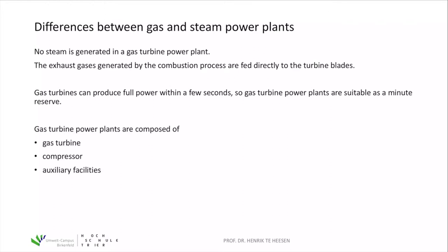Now we'll take a look at the difference between gas power plants and steam power plants. Up to now we've seen how coal or nuclear power plants work — they use heat to boil water to generate hot steam, and that steam drives a turbine to generate electricity. A gas power plant works in a different way: there's no steam generated in the gas turbine or gas power plant.